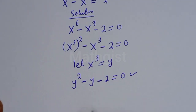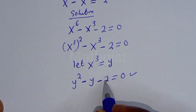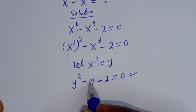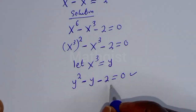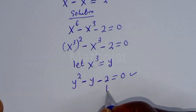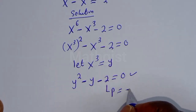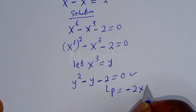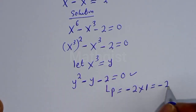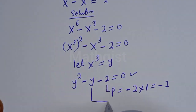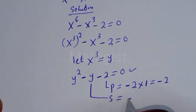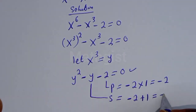Let's solve this using the factorization method. The product is minus 2 and the sum will be minus 1, because the coefficient of y is minus 1. The product is equal to minus 2 multiplied by 1, which is minus 2. And the sum is equal to minus 2 plus 1, which is minus 1.